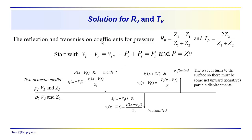Last time we solved for the reflection and transmission coefficients for the pressure wave disturbance propagating down through the subsurface. We found that the reflection coefficient was equal to the difference in the impedances, z2 minus z1, over the sum of the two impedances, z1 and z2, associated with a boundary between two layers. The impedance is just density times velocity, rho times v, and those impedances show up in the relationships for the reflection and transmission coefficients.